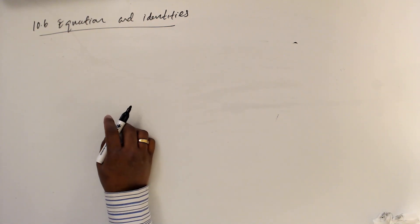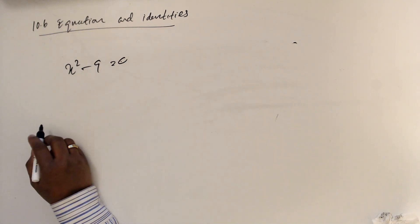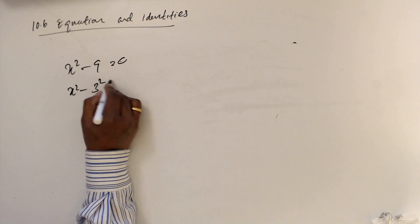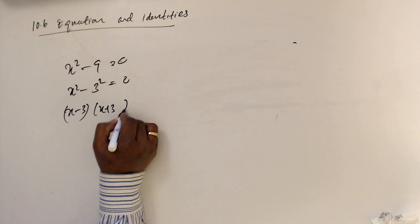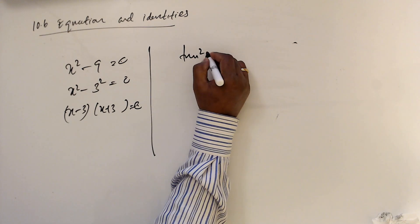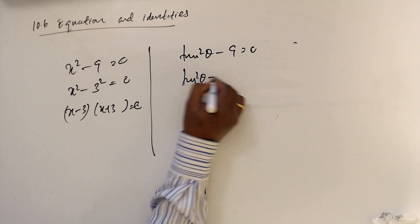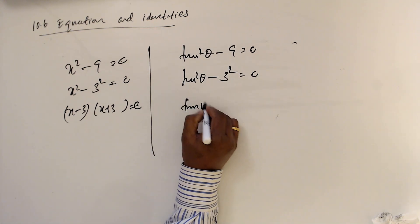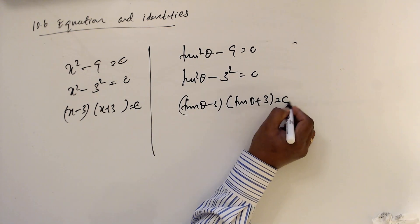Next, consider the equation x squared minus 9 equals 0. This is x squared minus 3 squared equals 0, so (x minus 3)(x plus 3) equals 0. What will happen with tan theta? tan squared theta minus 9 equals 0 means (tan theta minus 3)(tan theta plus 3) equals 0.